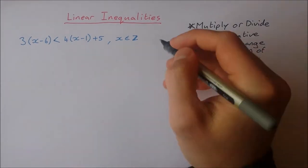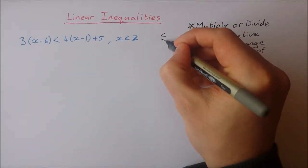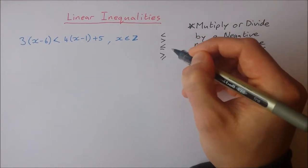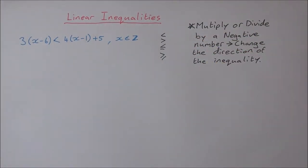We can have less than, greater than, less than or equal to, or greater than or equal to. Those are the four different signs that we can have now in inequalities instead of our equal sign.